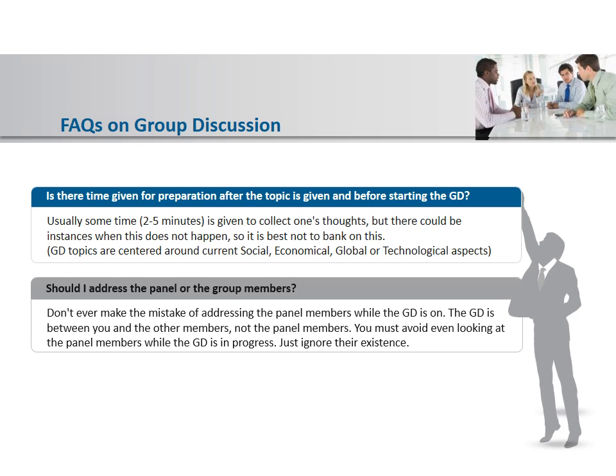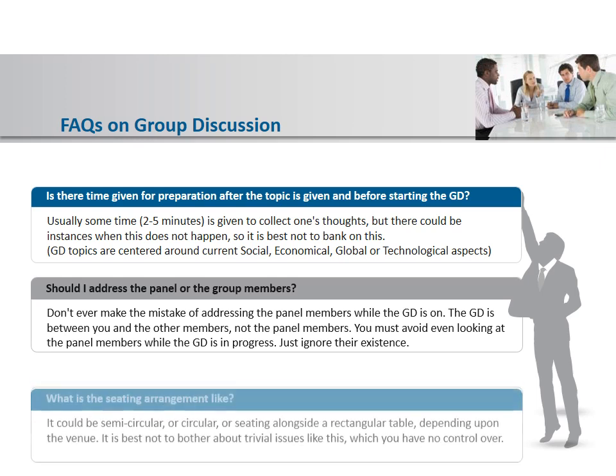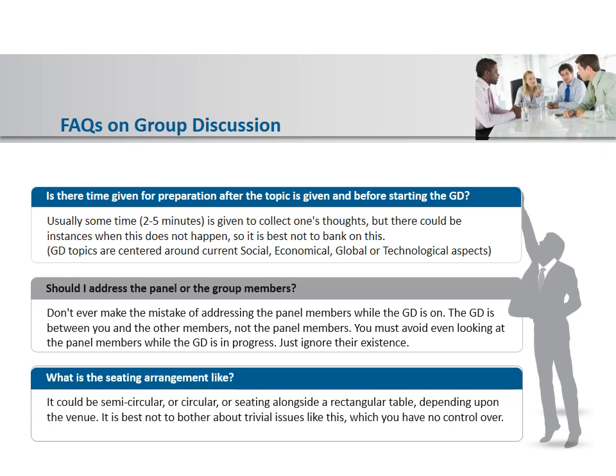Should I address the panel or the group members? No — don't ever look at your HR or recruiters and address them. GD is between you and the fellow participants. The HR or recruiter sits at the corner and acts as a silent spectator. You must avoid looking at the panel member or HR — it's very important.